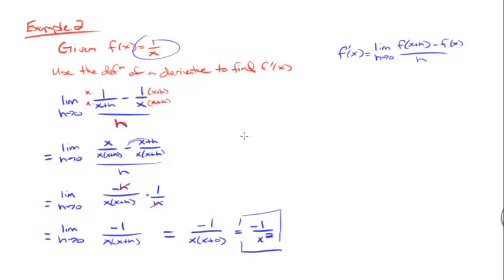So what I just found is if f of x equals one over x, f prime of x, the first derivative of f of x, is negative one over x squared.